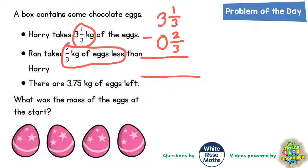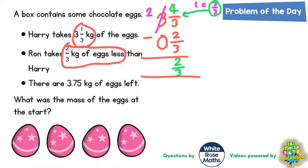If we borrow a whole one from the three, that becomes two whole ones. But remember, inside a whole one there are actually three thirds — one whole equals three thirds. So the one whole we've borrowed, we add those three thirds onto the next column: one third add three thirds becomes four thirds. Then we carry on just like doing a subtraction column method, so four thirds take away two thirds would be two thirds.